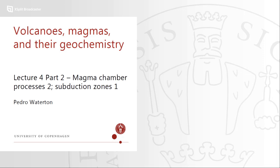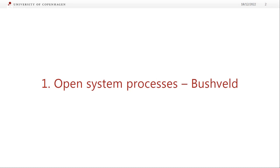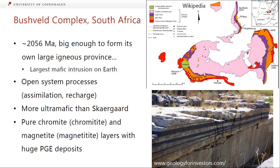Now we're going to go to the other extreme end and talk about open system processes. I wanted to talk about the Bushveld intrusion because it's the biggest magma chamber on Earth. The Bushveld complex — you'll sometimes see it called complex, sometimes intrusion — is in South Africa, about 2 billion years old, and it is big enough to be a large igneous province on its own. This is the largest mafic intrusion on Earth, about 400 kilometers across, with a colossal volume of magma.